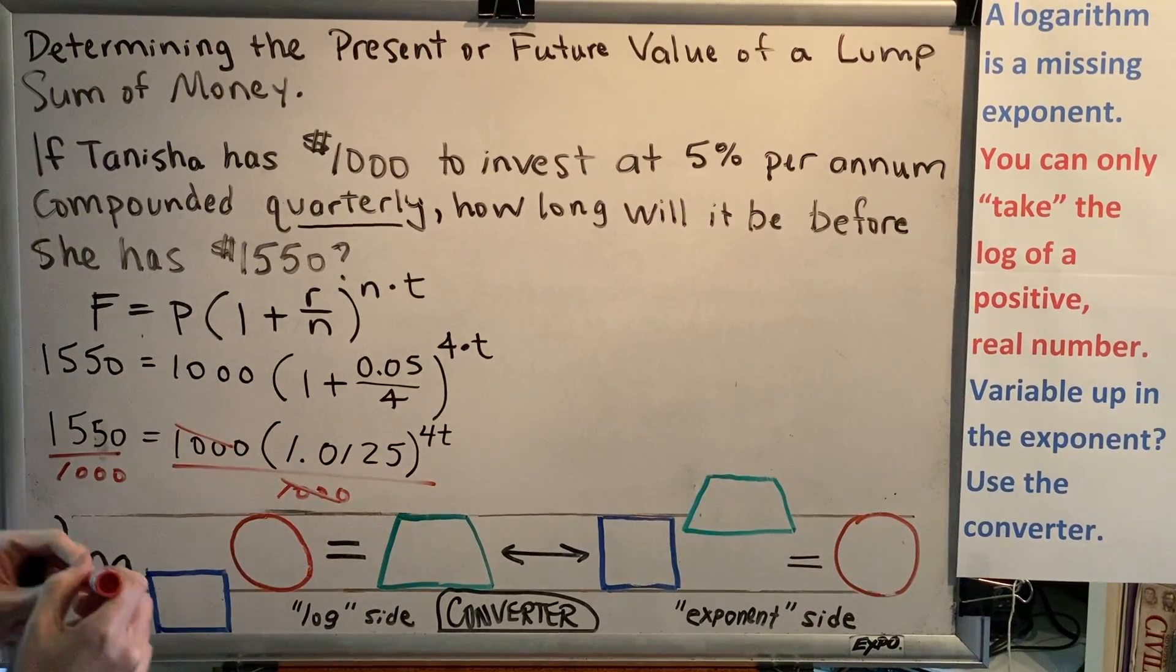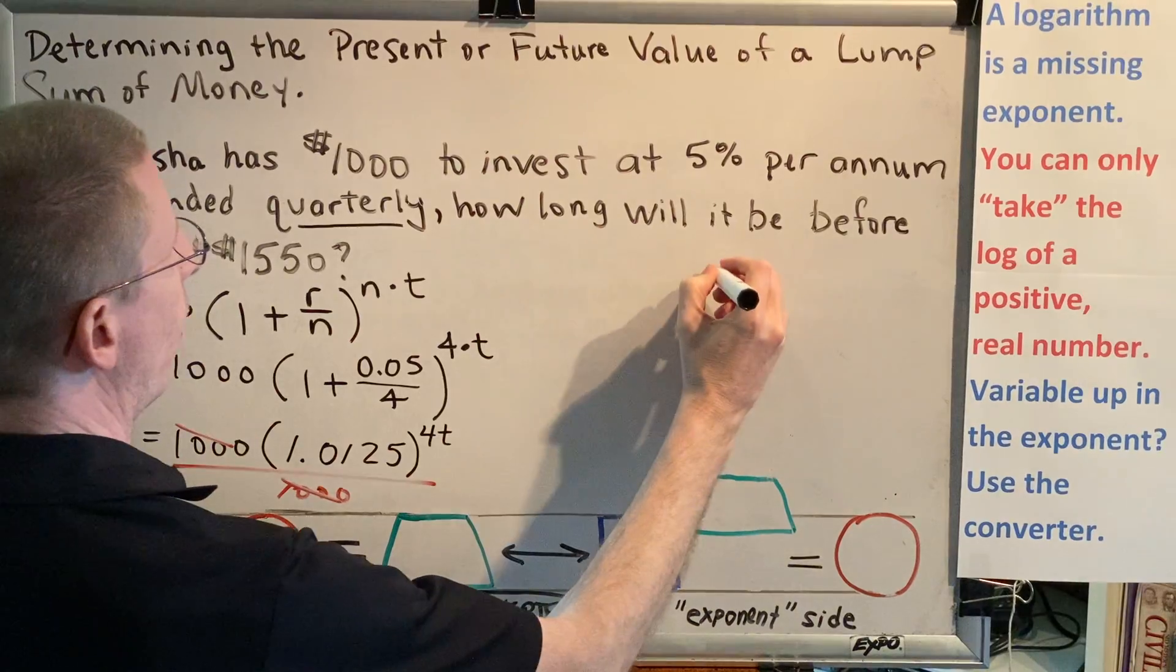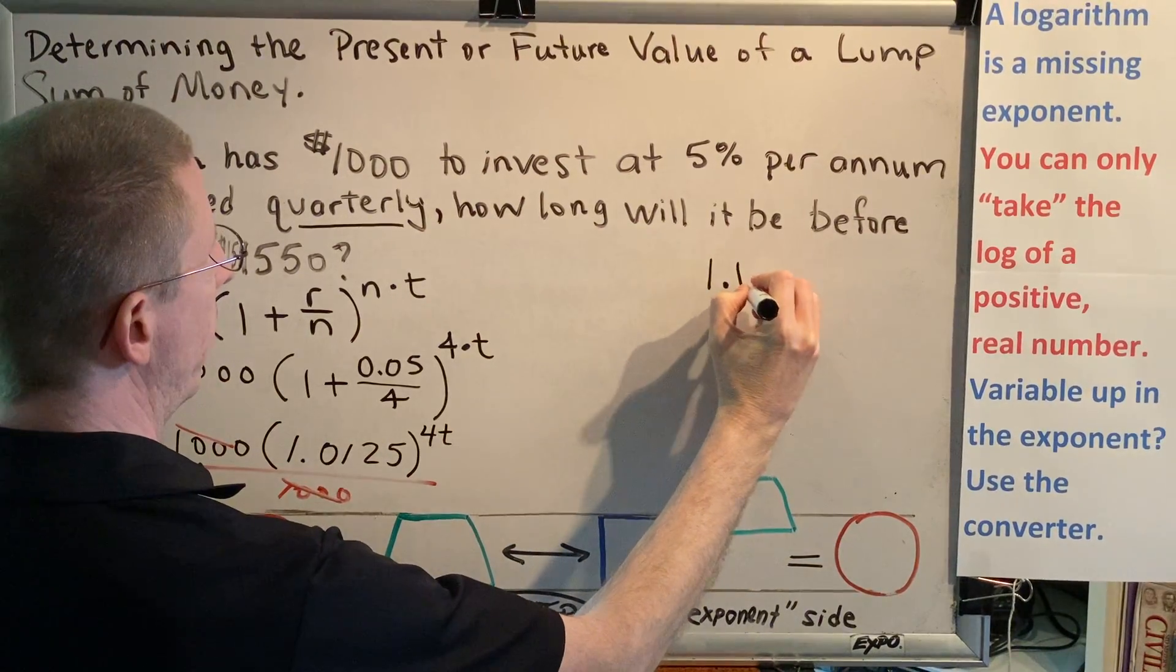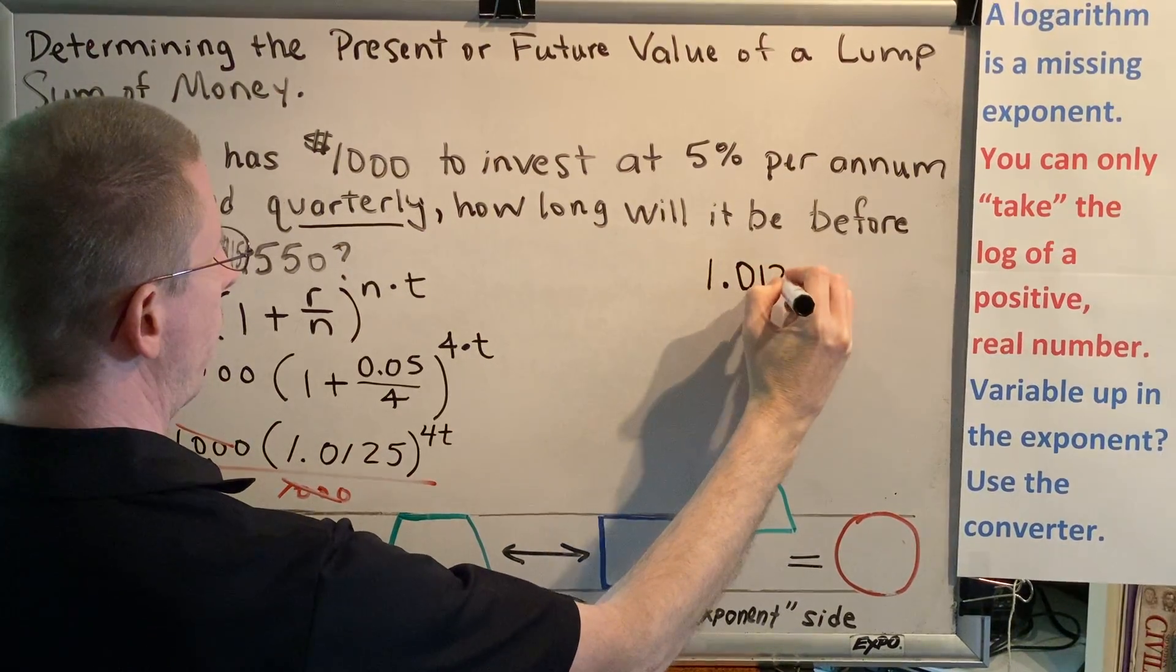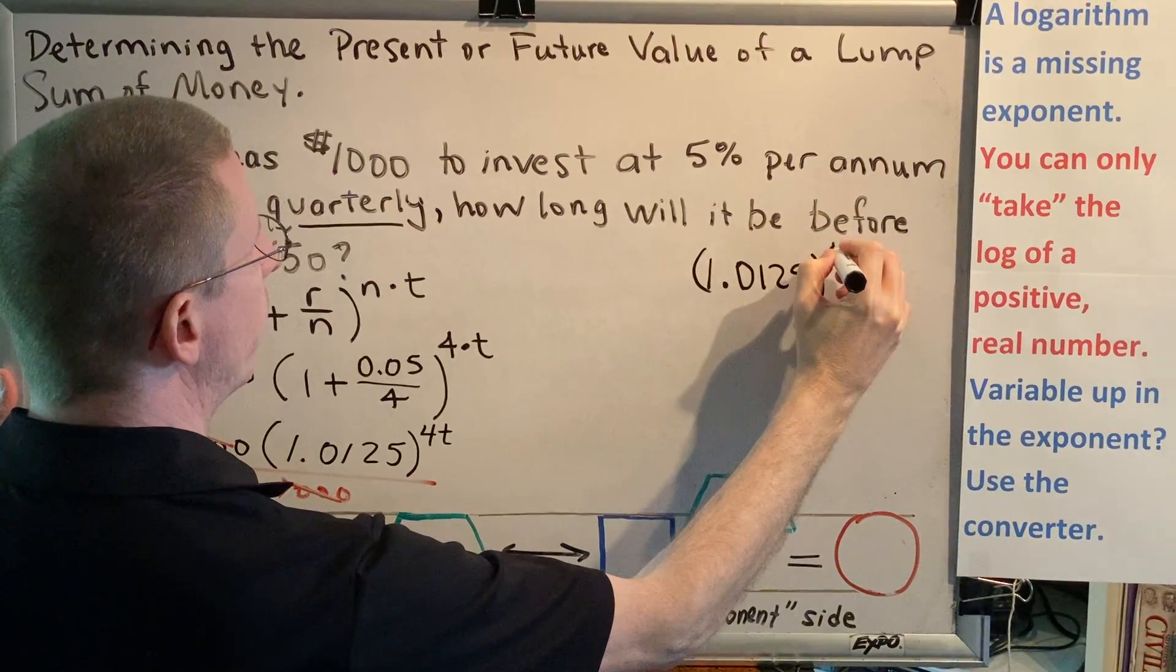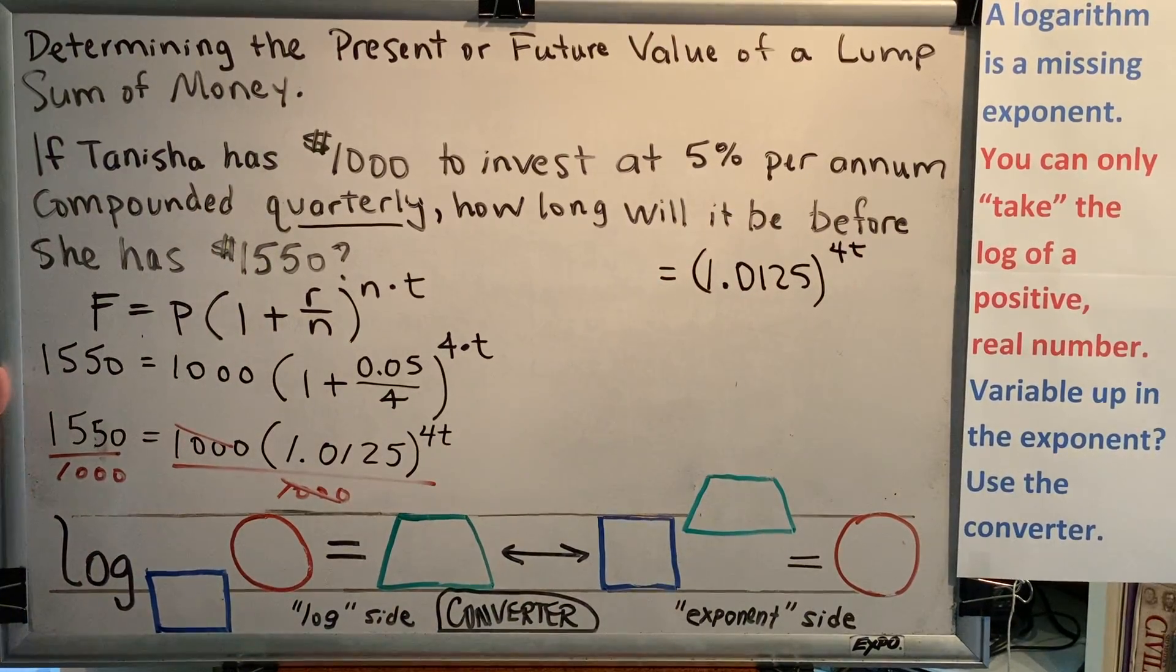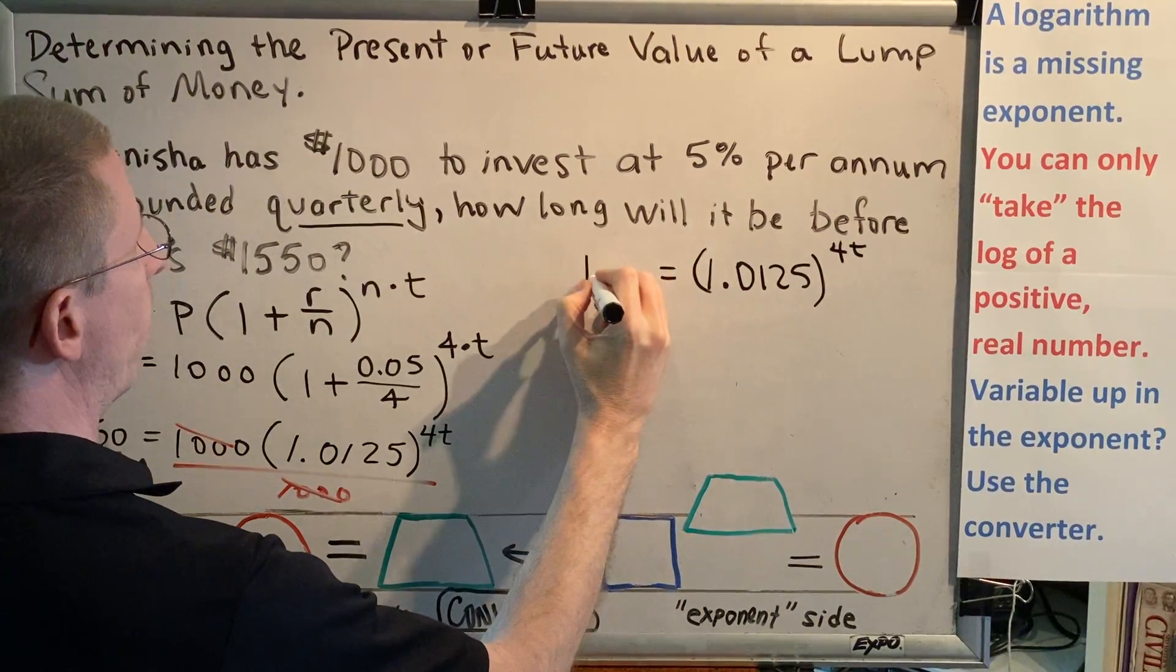On the right side, the 1,000s cancel to the number 1, and because anything times 1 is itself, and anything divided by 1 is itself, the right side of our equation is simply 1.0125 to the 4t power. And the left side is 1550 divided by 1,000, which is 1.55.